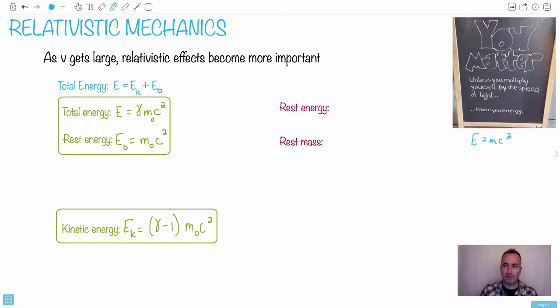But back to this sign here. You matter, right? Unless you multiply yourself by the speed of light. They're basically saying E equals MC. They should have said speed of light squared. But, you know, maybe that's not so important.